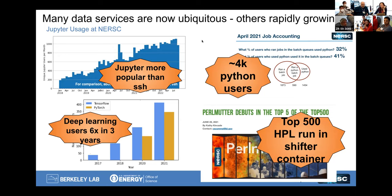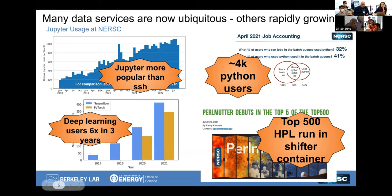Python is also rapidly growing — basically everybody uses Python, to first approximation. A large fraction of batch jobs use Python in some way, and that's also a large fraction of the compute time. With deep learning, we saw a growth of 6x in just three years. PyTorch wasn't even on our radar in 2017, and it's now pretty much overtaken TensorFlow.